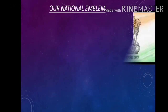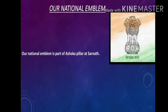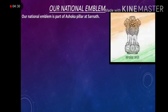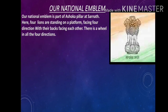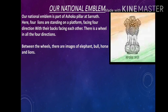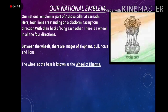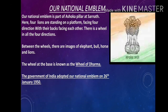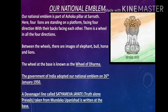Our national emblem is part of the Ashoka Pillar at Sarnath. Here, four lions are standing on a platform facing four directions with their backs facing each other. There is a wheel in all four directions. Between the wheels there are images of an elephant, bull, horse, and lion. The wheel at the base is known as the Wheel of Dharma. The Government of India adopted our national emblem on 26th January 1950. A Devanagari line 'Satyameva Jayate,' which means 'Truth alone prevails,' taken from the Mundaka Upanishad, is written at the base.